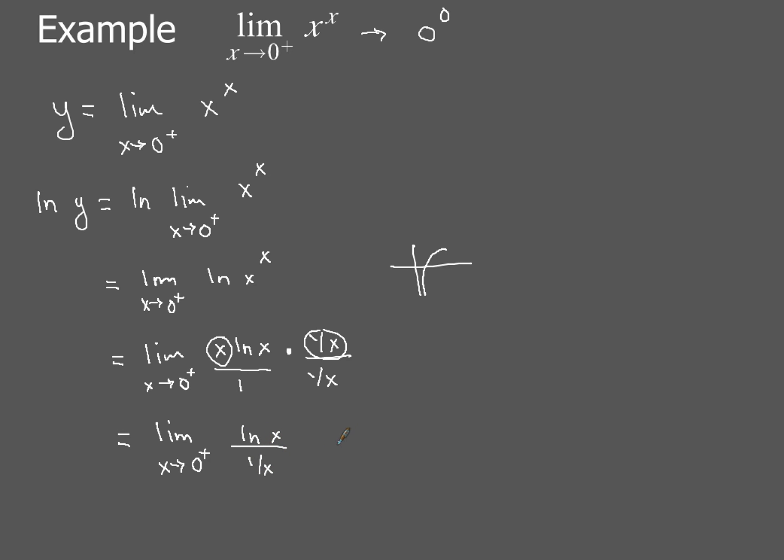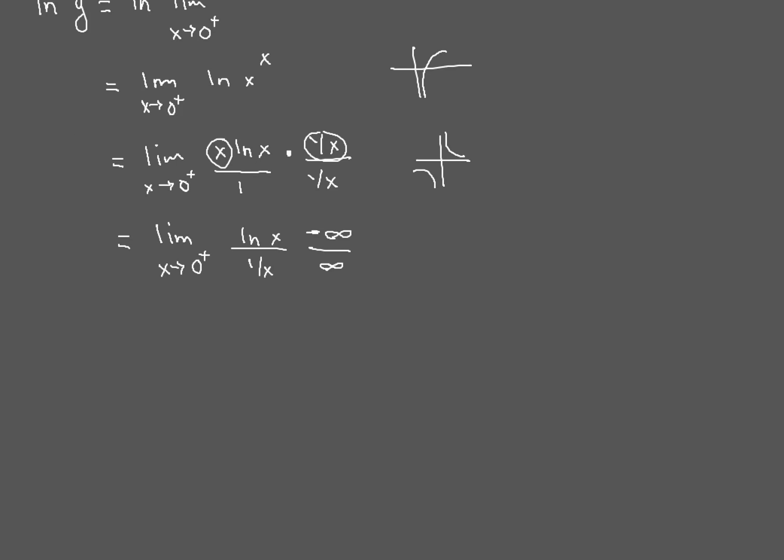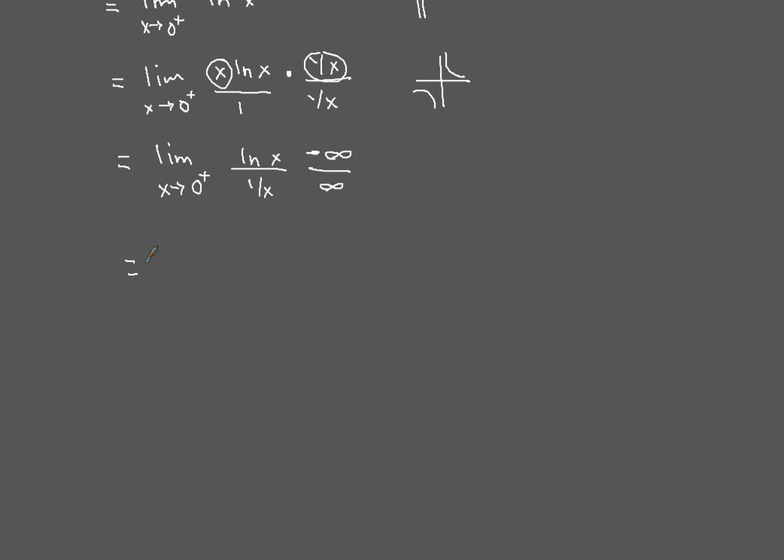And when we evaluate that limit as x goes to 0 from the right, natural log of x, that part is going to go to infinity. And since it's going down forever, that's actually going to go to negative infinity. And then 1 over x, that particular graph, you have to remember what that graph looks like. So the 1 over x graph is going to look like this piece right here. So that is going to go to positive infinity. So we've got infinity over infinity. So now we've got that kind of form, and we can reevaluate that. We can take the derivative of the numerator and the denominator.